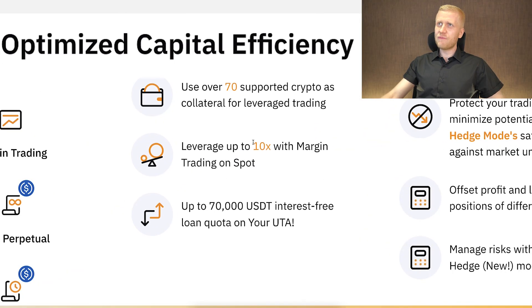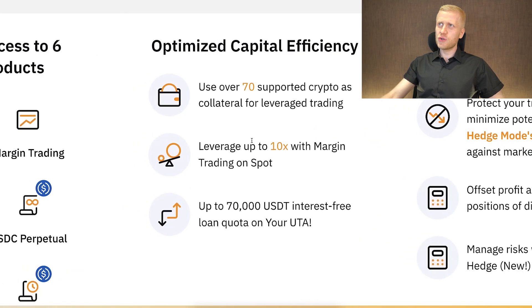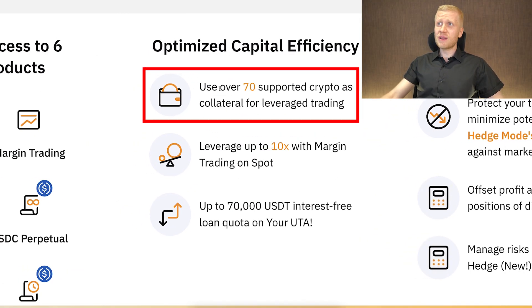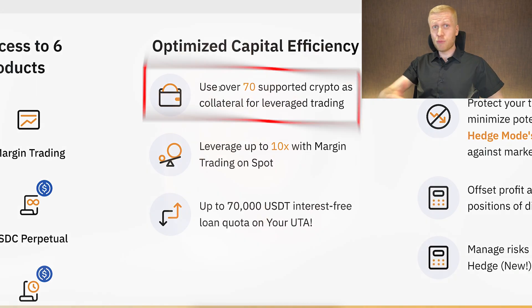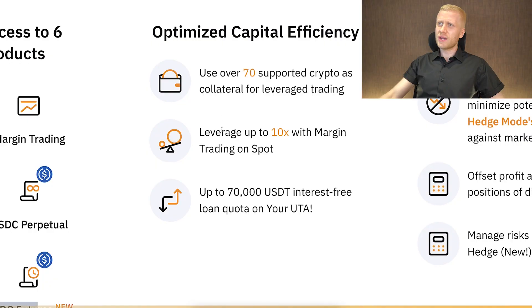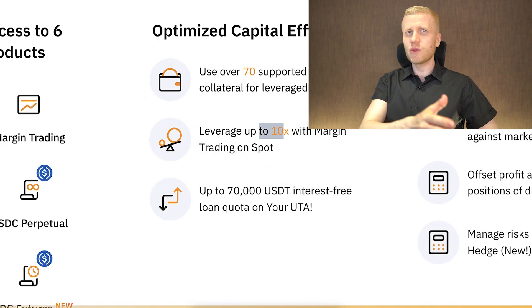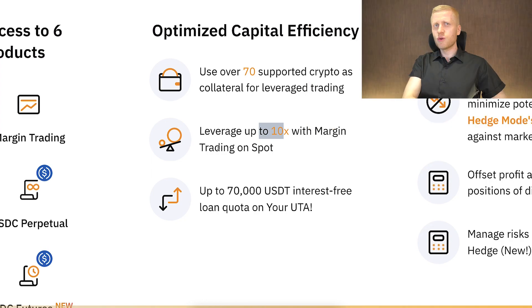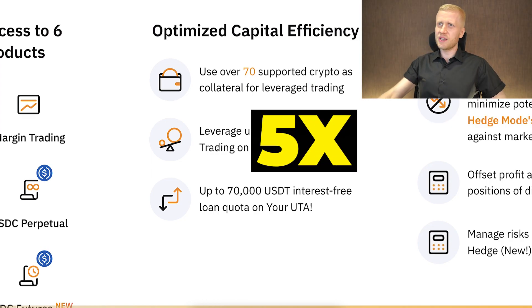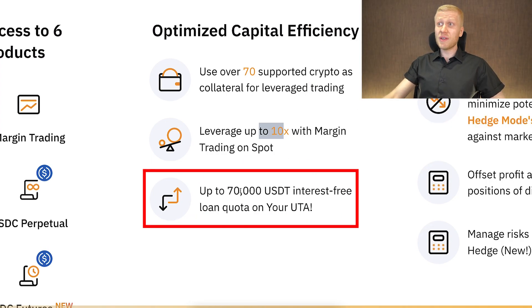UTA also gives you capital efficiency because you can use 70 different cryptocurrencies as collateral for leverage trading — and perhaps even more if you are watching this video in the future. You can use up to 10x margin trading on spot, while with a normal account you can only use up to 5x. You can also get up to 70,000 USDT interest-free loan quota on your UTA.